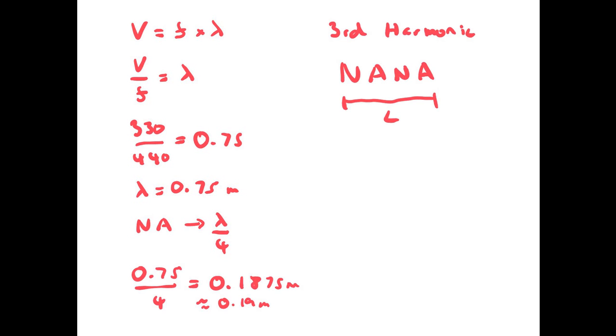So, we've got a node at the bottom of the pipe where it meets the water and an antinode at the top. And we've got a node, antinode, node, antinode going all over the pipe.